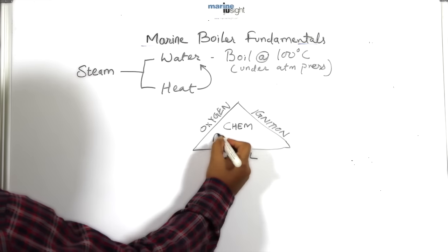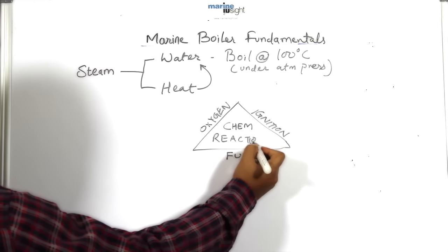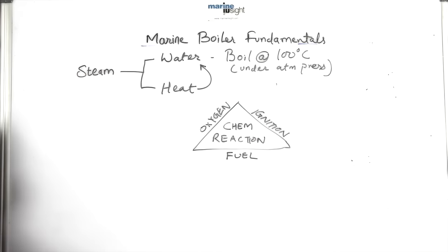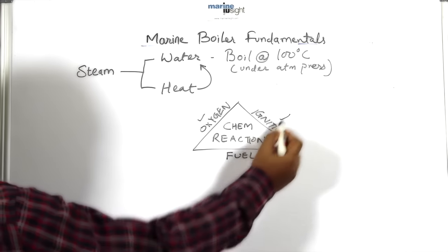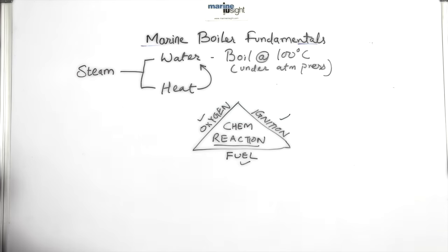When all the three sides of a fire triangle—that is oxygen, ignition source, and fuel—are in correct balance condition, chemical reaction occurs which creates fire.